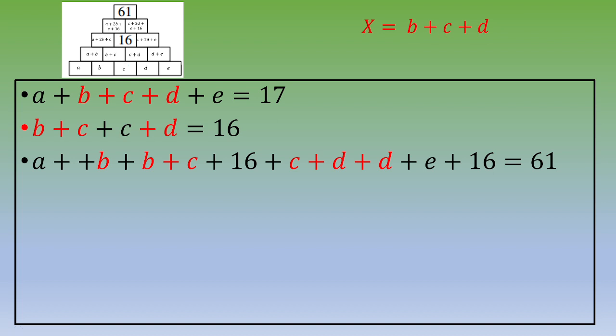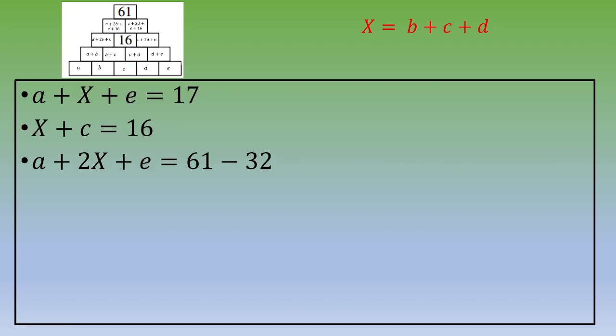So we can set that x equals b plus c plus d. And now, we plug x inside these three equations. And we get a plus x plus e equals 17, x plus c equals 16, a plus 2x plus e equals 61 minus 32.